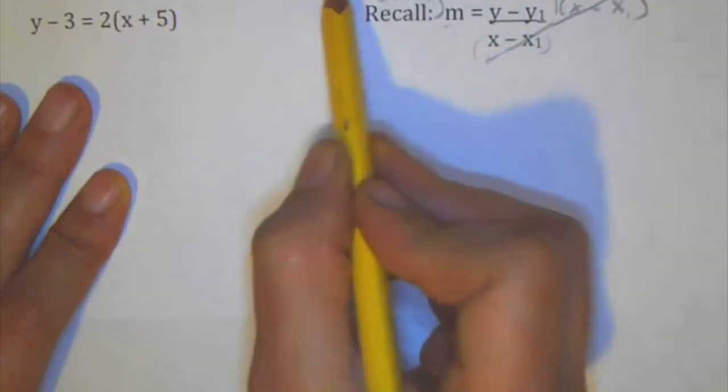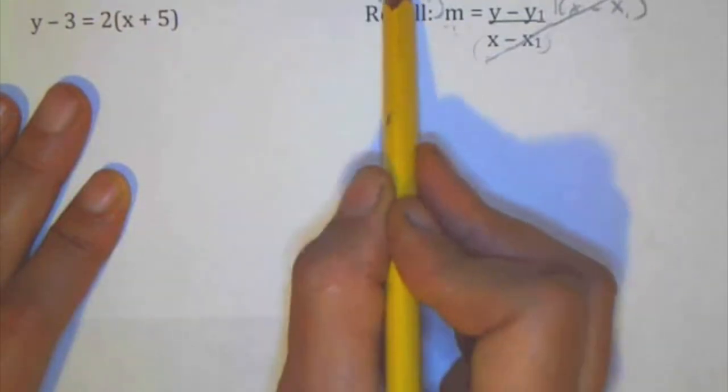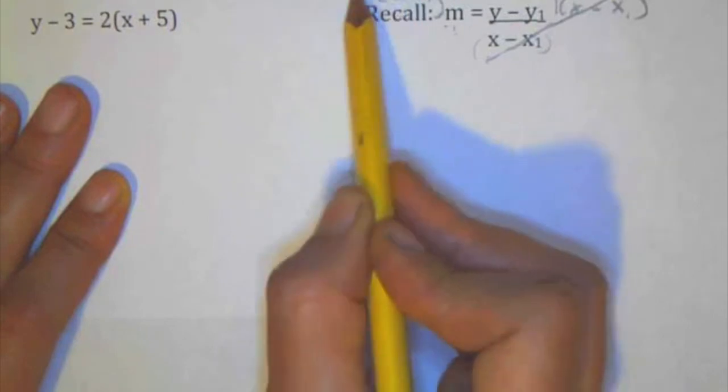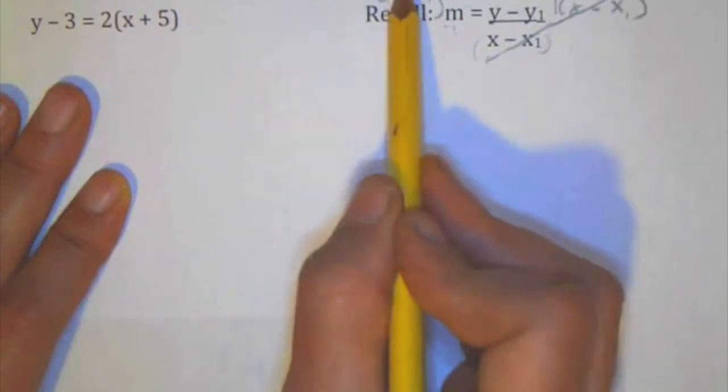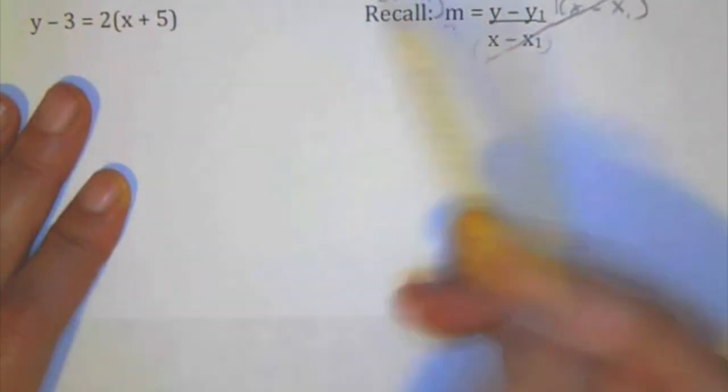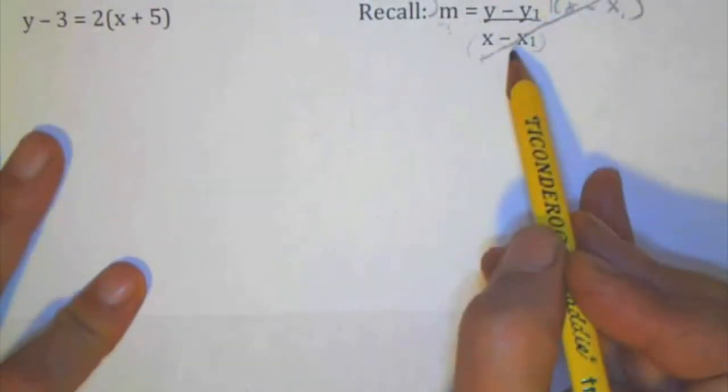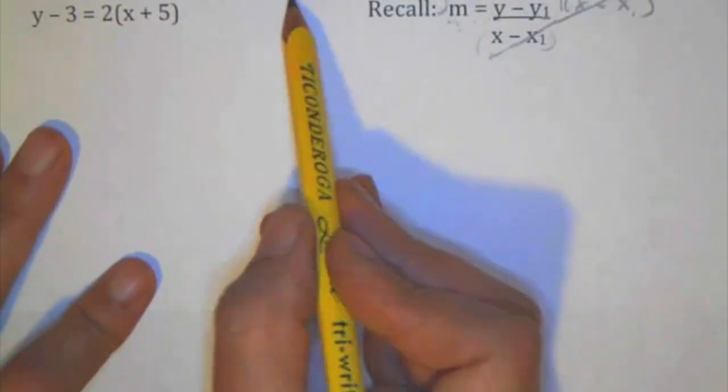This whole thing here cancels, and so I'm left with this equation here. M times x minus x1, it's like a tongue twister tonight, m times x minus x sub 1 equals y minus y sub 1. Sorry, the sides are flipped over there. I promise you it's the same thing. So this here is called the point-slope form.